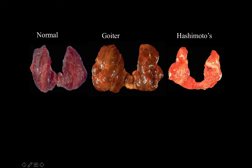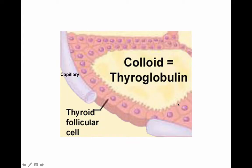A goiter occurs due to a lack of iodine causing swelling of the thyroid. Graves' disease is an autoimmune disease that allows thyroid hormone to be created and run unchecked, disregarding any attempt at downregulation by the hypothalamus. Hashimoto's is another autoimmune disease causing hypothyroidism — the most common form of thyroid disease — where antibodies created by the immune system cause swelling.